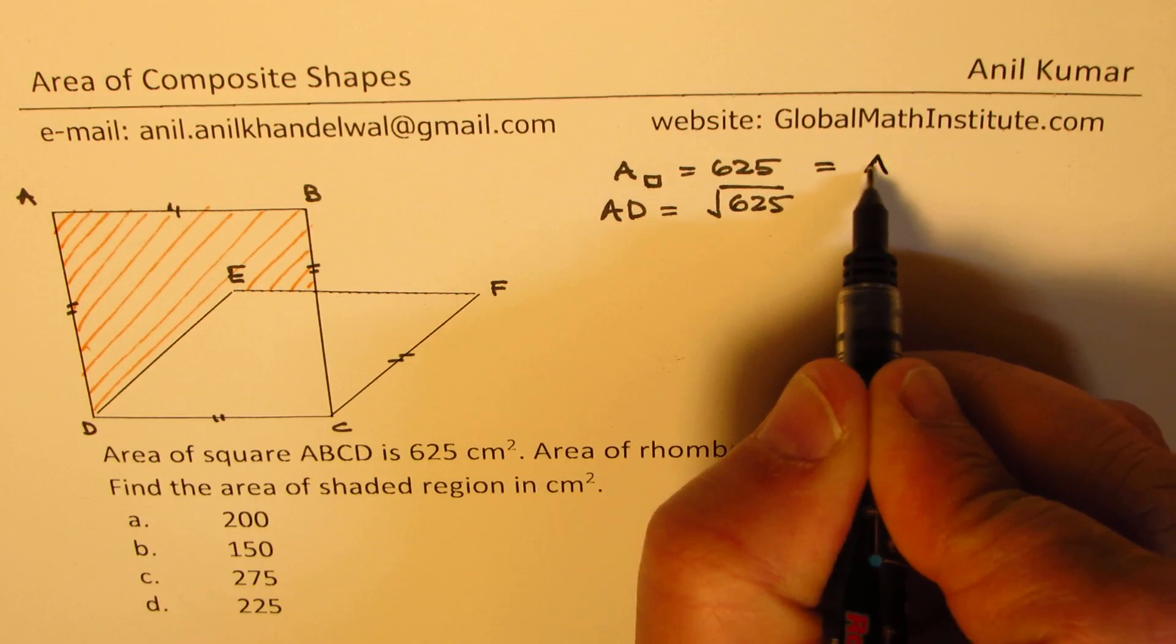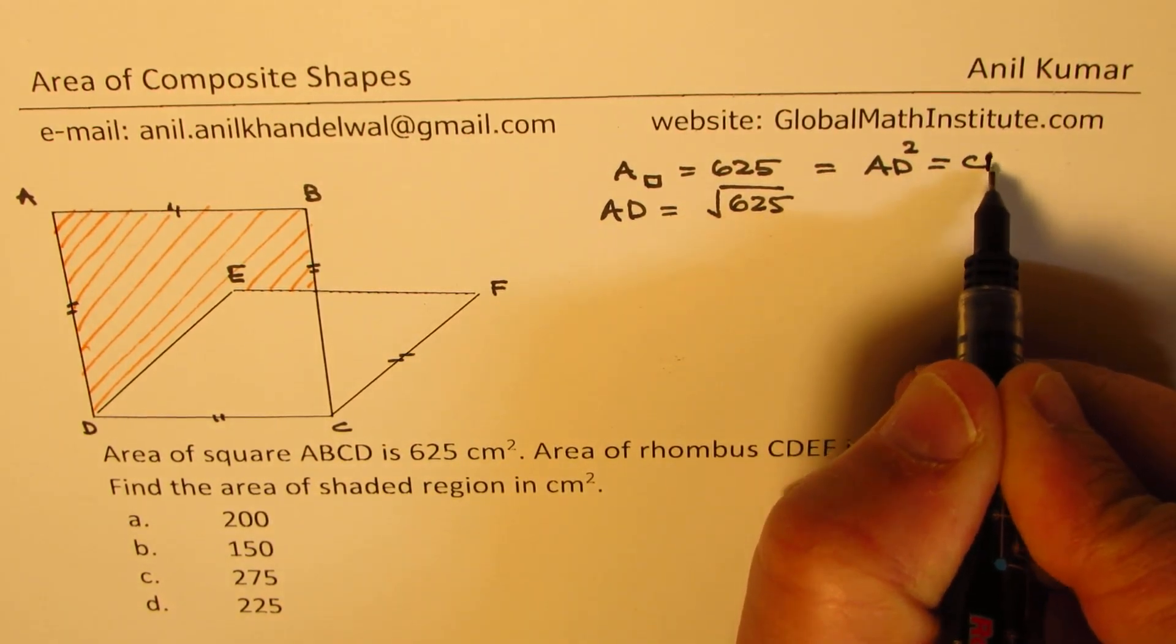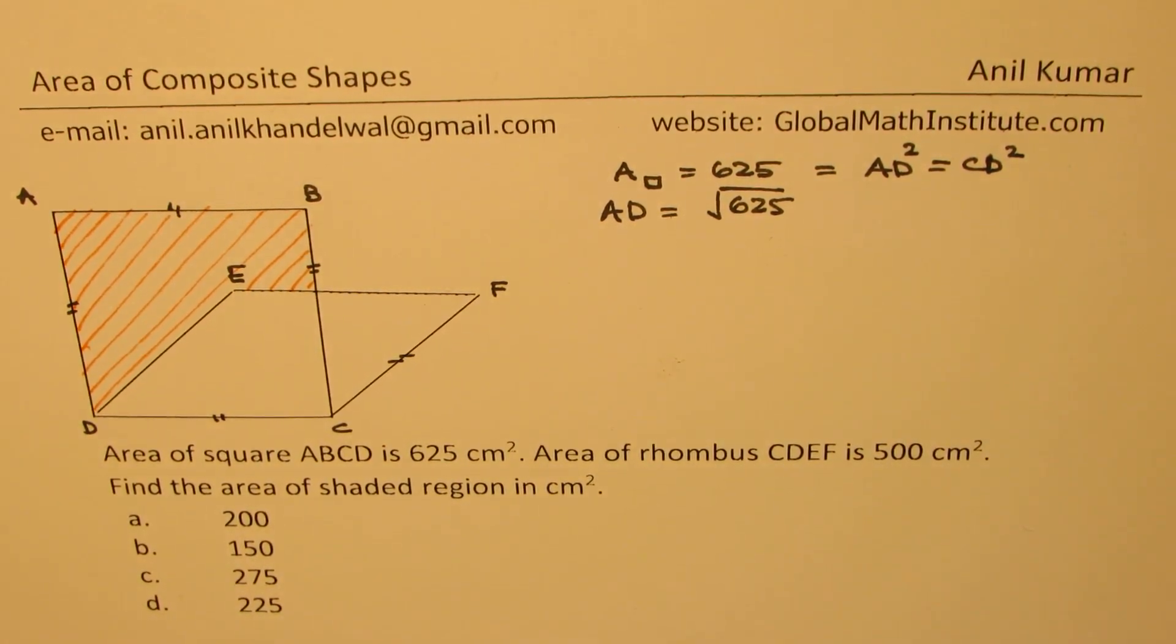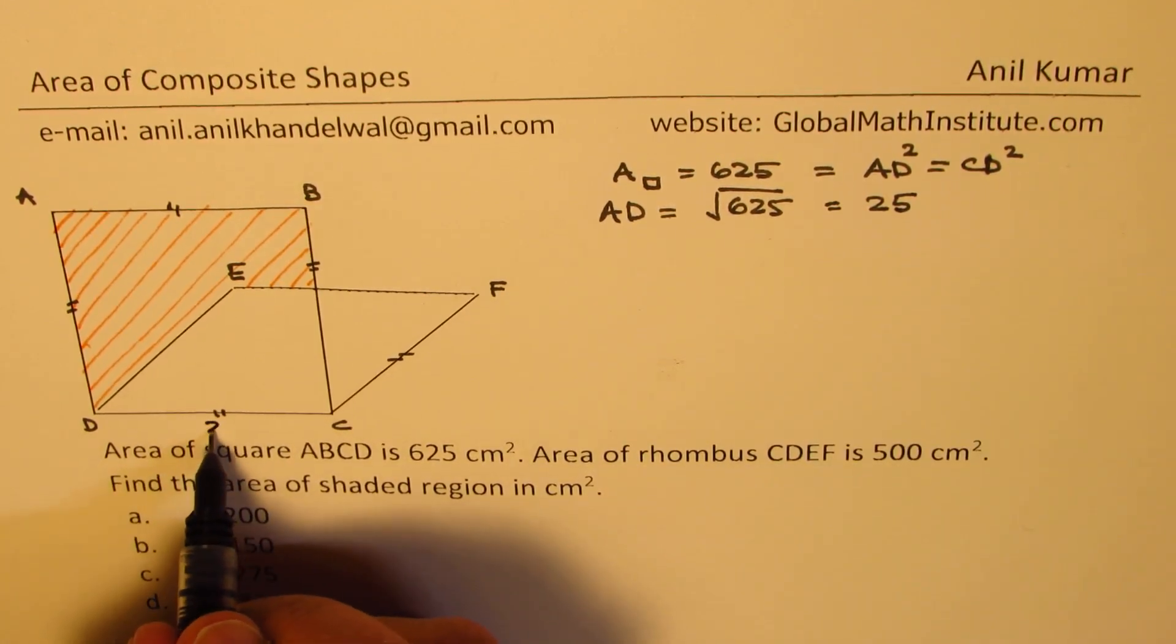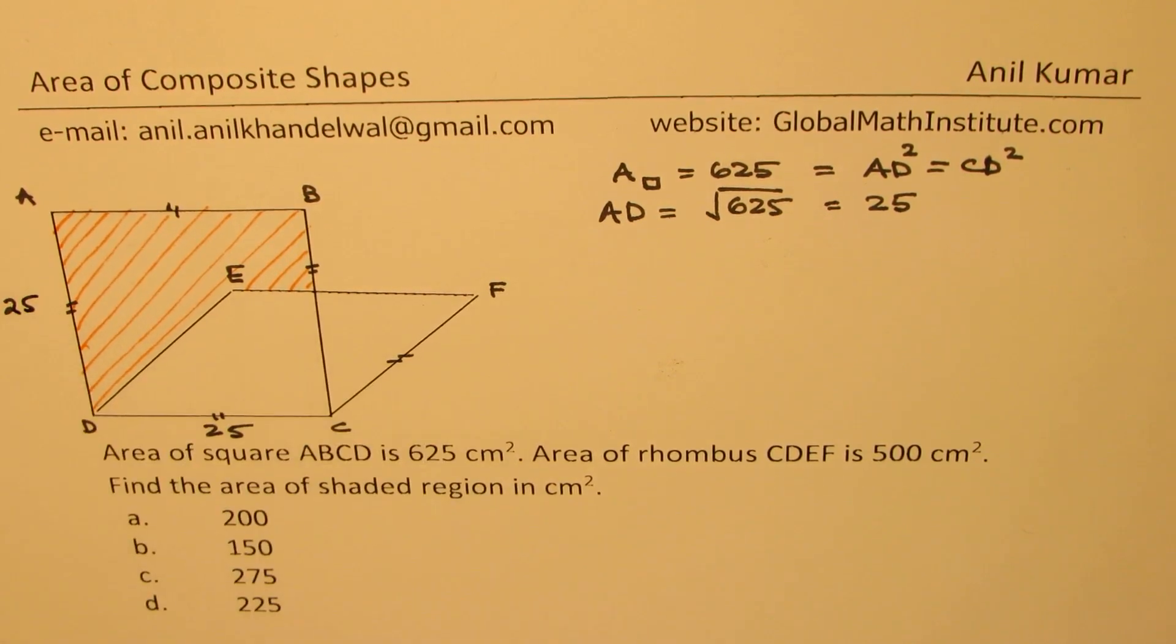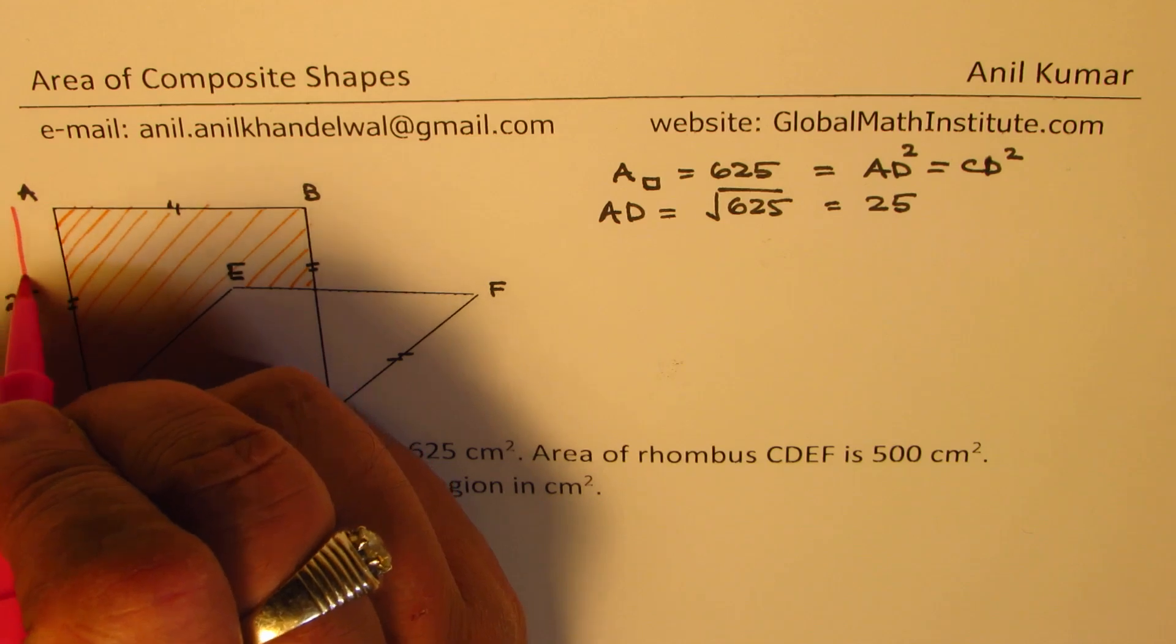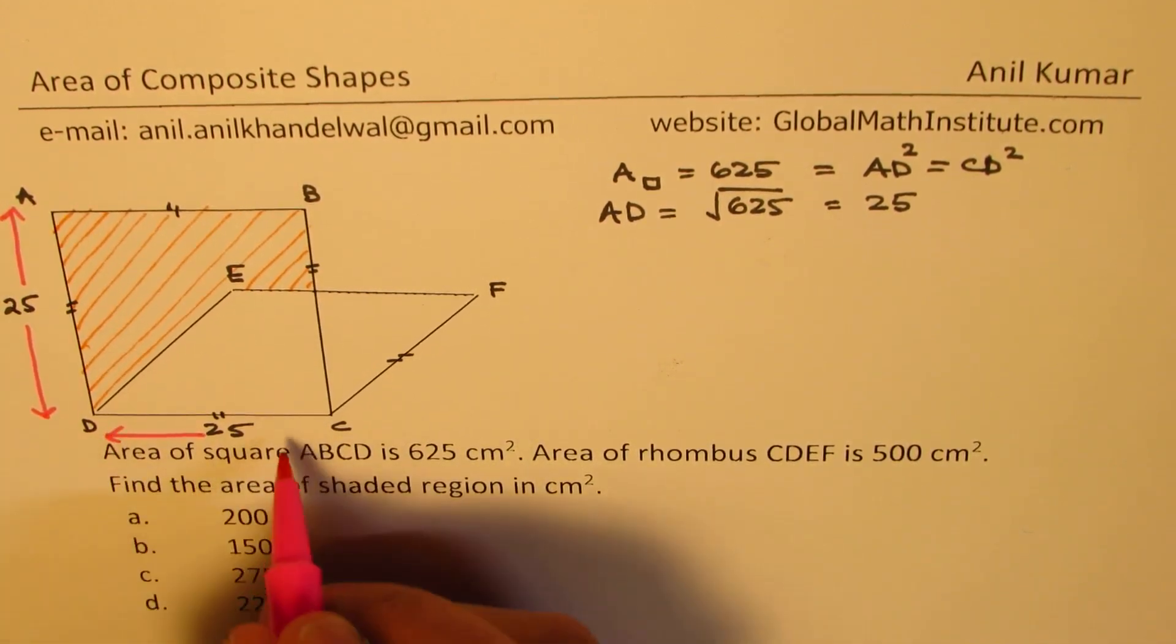Square root of 625, as you know, is 25. So we get this side as 25 units in centimeters and that is the vertical. Both sides are 25. So we got one thing, sides. So let me say this side is 25 and this side is also 25.